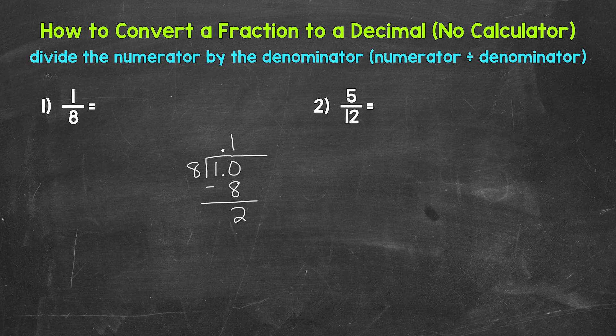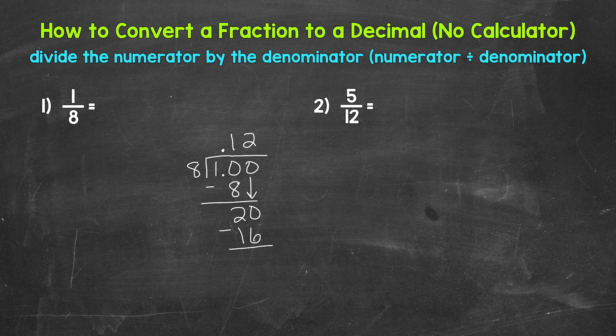We don't have a clean cut zero at the bottom, so we can use another zero that we can bring down to continue on. Now we have 20 — 20 divided by eight. How many whole groups of eight in 20? Two, that gets us to 16. Two times eight is 16. Subtract — 20 minus 16 is four.